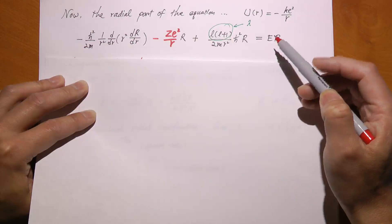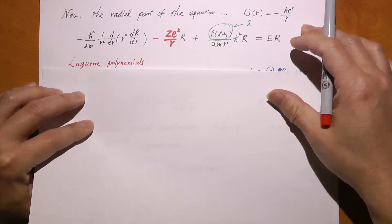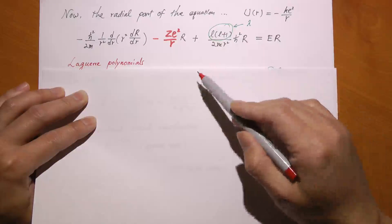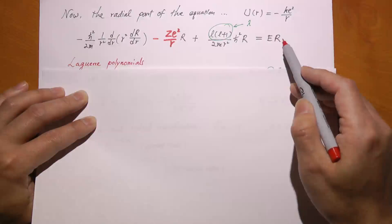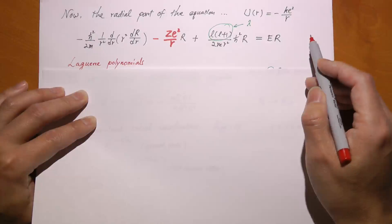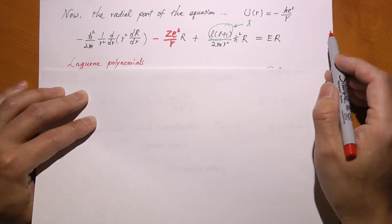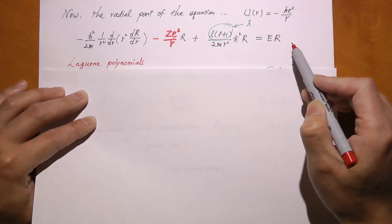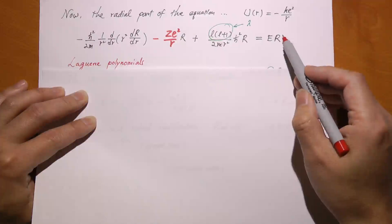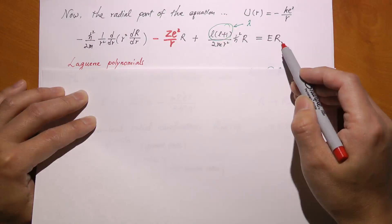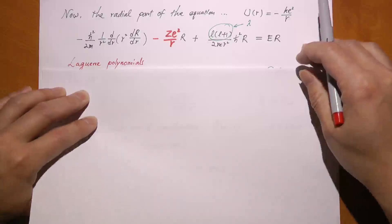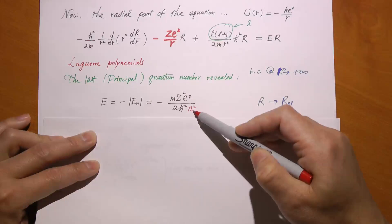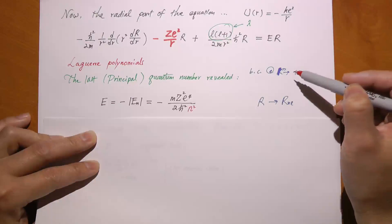The solution to the radial equation is another special function called the Laguerre polynomial. If you work it out, you find that unfortunately the Laguerre polynomial goes to infinity at r equal to infinity — at infinite distance — which is totally wrong. When r equals infinity, the chance of finding the electron there is zero, because the hydrogen atom is finite-sized. So we don't want to accept that. To make sure psi does not go to infinity — that it should go to zero — it turns out you cannot choose any arbitrary energy E.